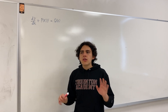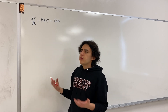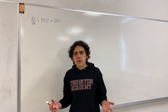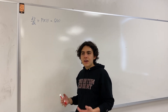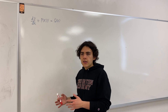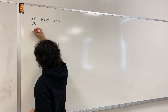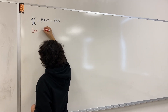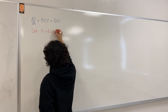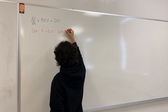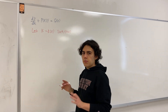Now the integrating factor method is a little strange at first because it looks like it comes out of thin air, but I'm going to show you the reasoning behind it. So to use this method, we're going to multiply both sides of the equation by a common factor or function of x, and this function has to satisfy a very important property. I'm going to use the letter k for our integrating factor.